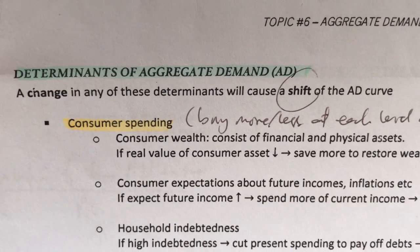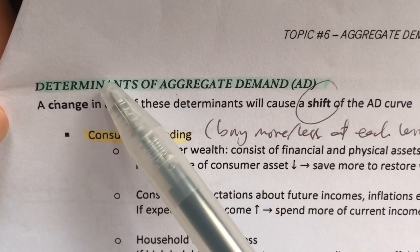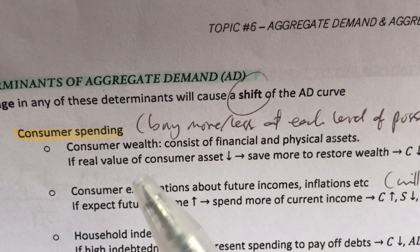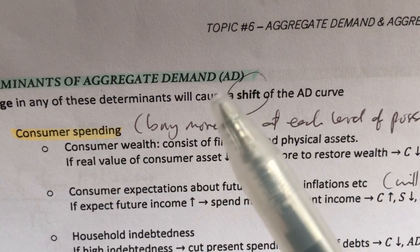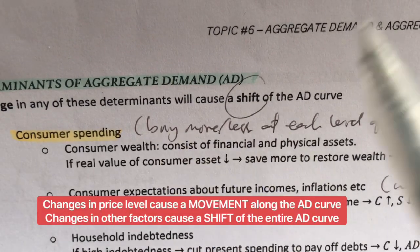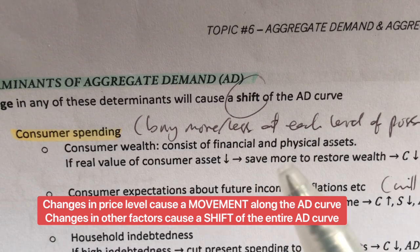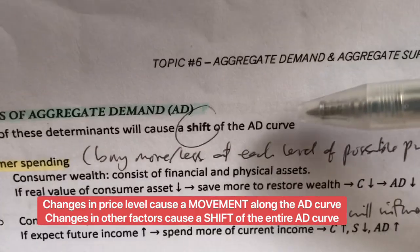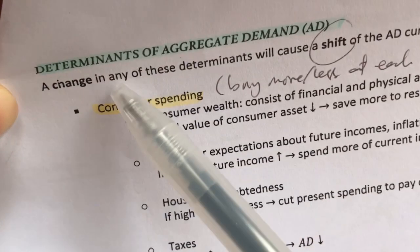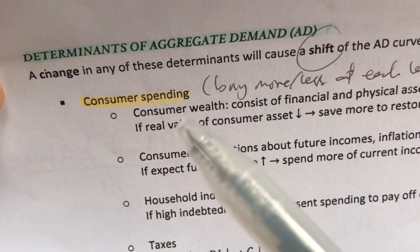Now let's take a look at what are the determinants of aggregate demand. Determinants are basically factors that make the aggregate demand curve shift. Just now we were talking about what happens when the price level changes — that is only a movement along the same aggregate demand curve. If you want to talk about what makes the aggregate demand curve shift, we study these determinants. To do that, we have to look at the four categories of buyers.